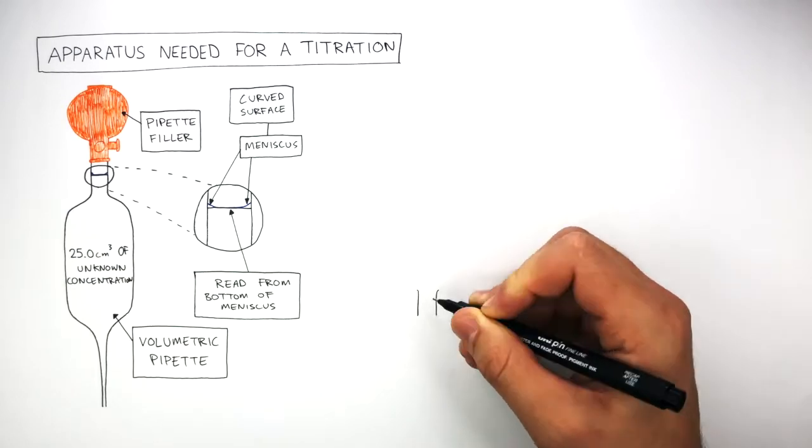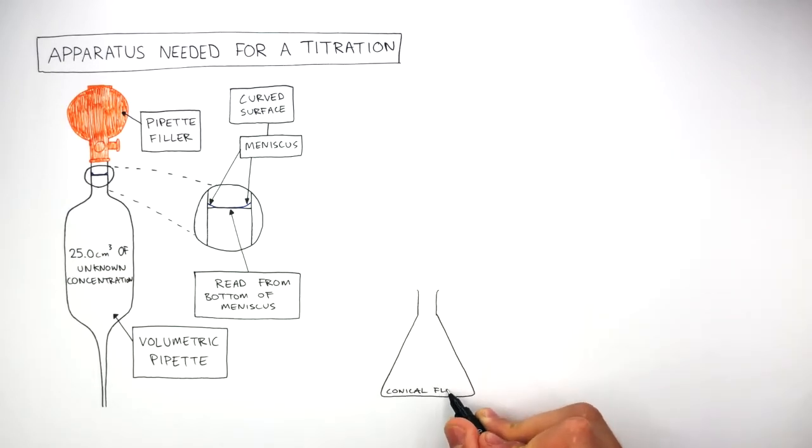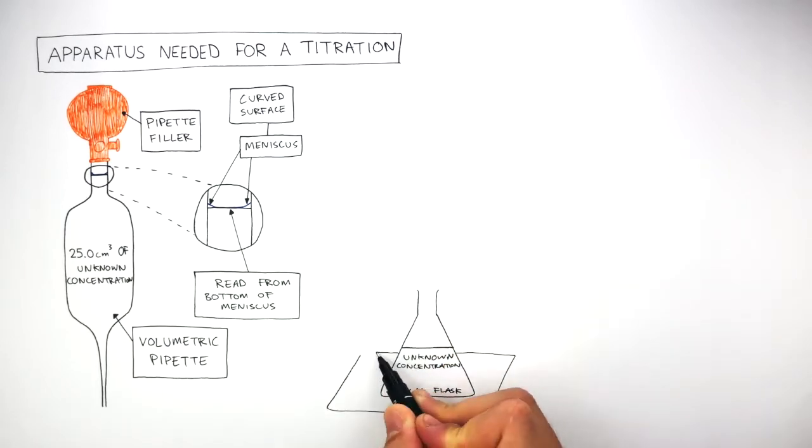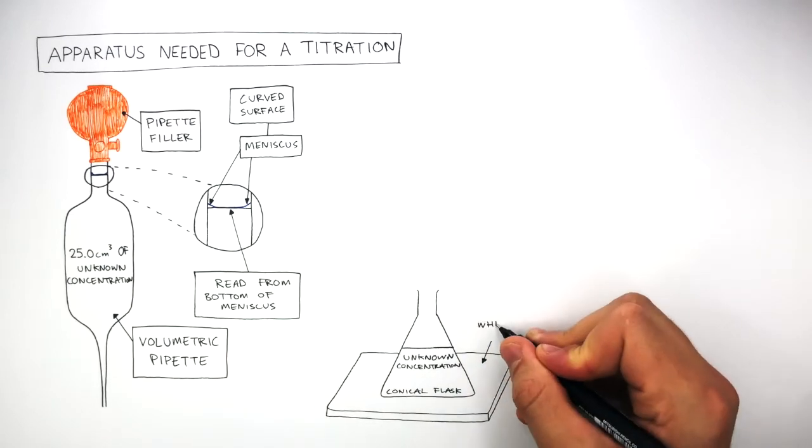This is a conical flask and the conical flask contains the unknown concentration measured in the volumetric pipette. The conical flask with the unknown concentration then goes on a white tile.